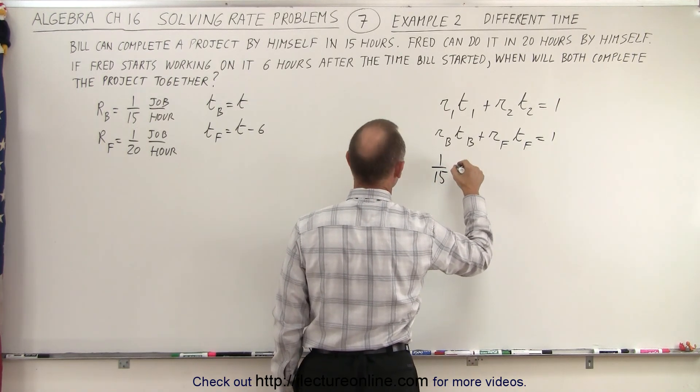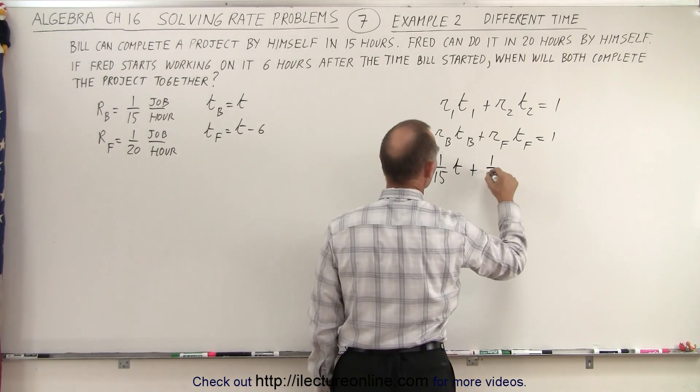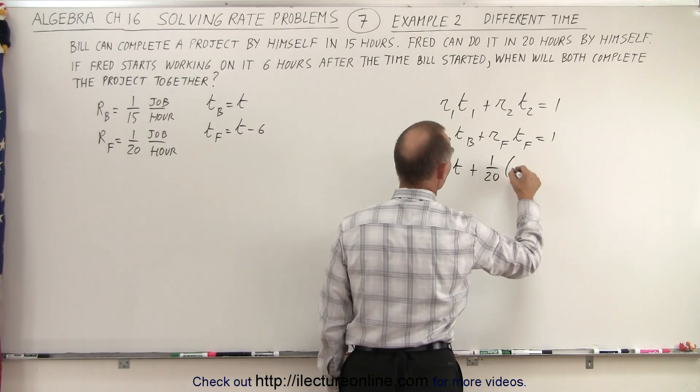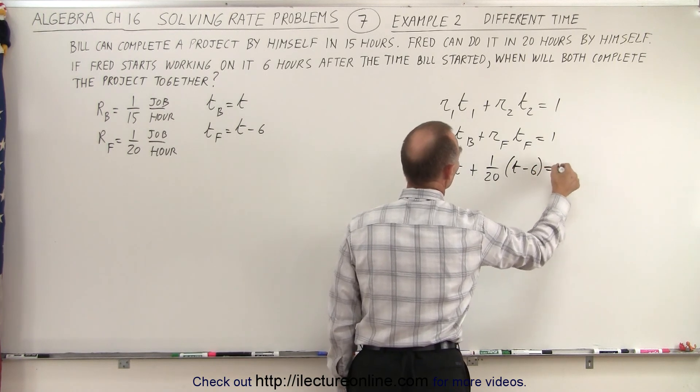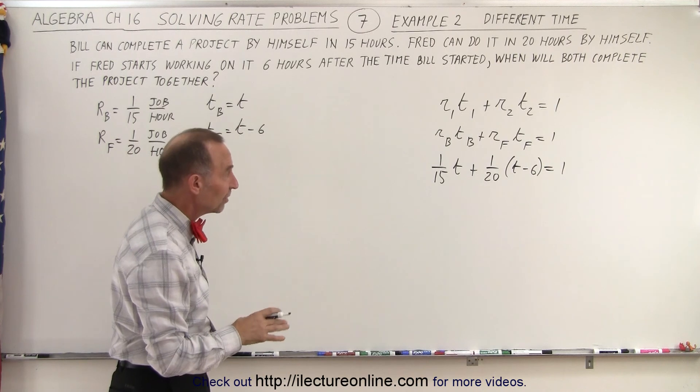So times the time of Bill which is t plus the rate of Fred which is one-twentieth times the time of Fred which is t minus six equals the whole job done. And now the only thing that's left to solve in that equation is the time.